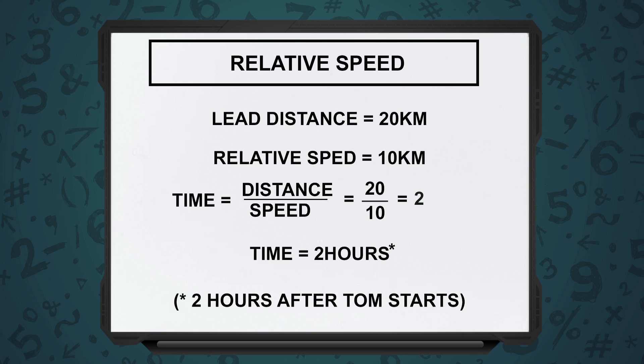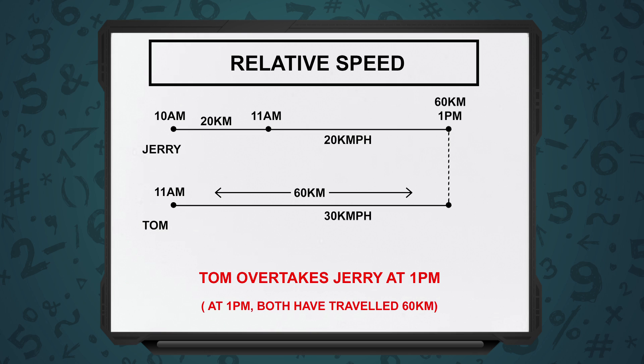The question asks at what time will Tom overtake Jerry. A common mistake many students make in the exam is they take the starting time as 10 a.m., add 2 hours, and say 12 p.m. But the question is about Tom overtaking Jerry, so our frame of reference starts from 11 a.m. Tom started his chase at 11 a.m. and covers the lead of 20 km at a relative speed of 10 km/h from 11 a.m. So, 2 hours from 11 a.m. — Tom will overtake Jerry at 1 p.m.